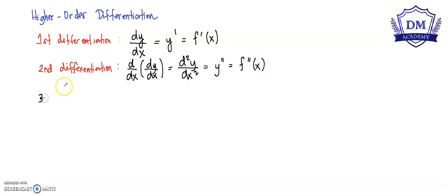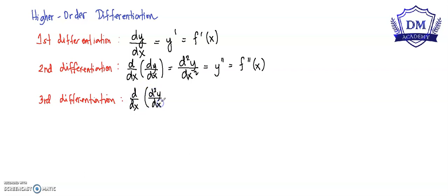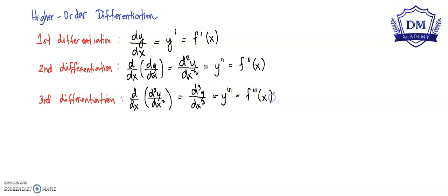To find the third derivative or the third differentiation of the given function, all you have to do is find the derivative of the second derivative. This is equal to d cubed y over dx cubed, also known as y triple prime or f triple prime of x. To find the nth derivative, it is denoted by d raised to n of y over dx raised to n.